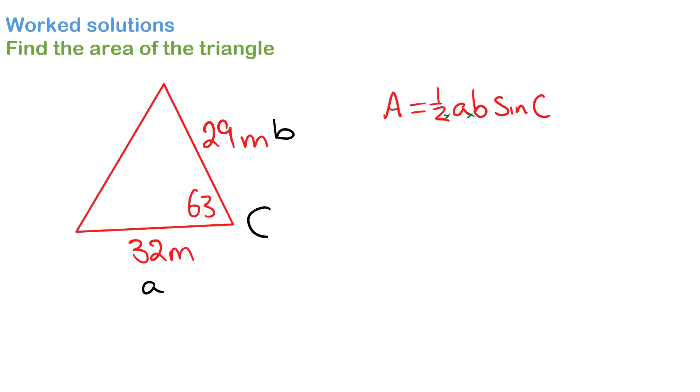Now that we've labeled them and we've got a formula written down, we can substitute in our values where A is 32 and B is 29. Then we have sine 63.